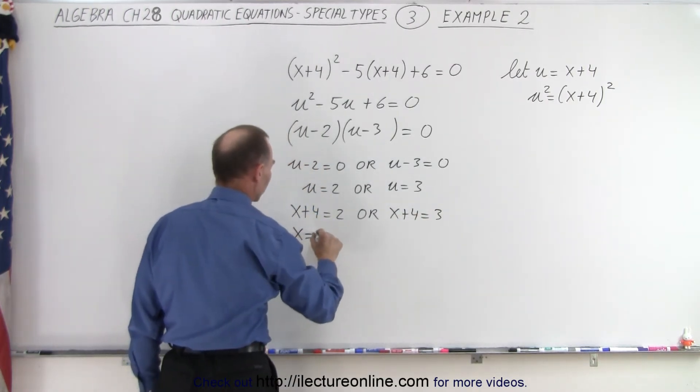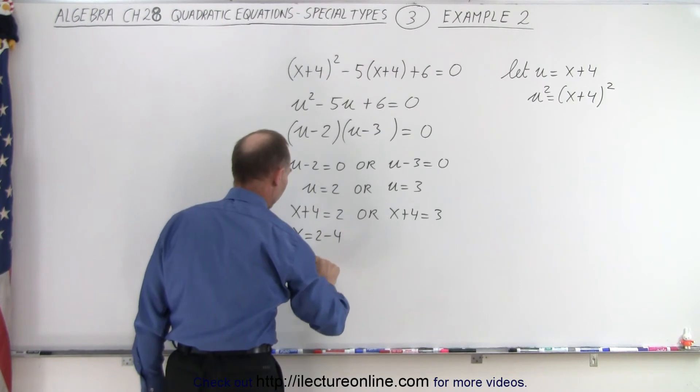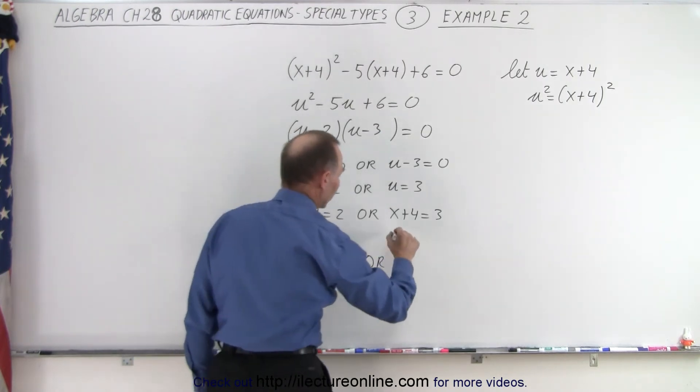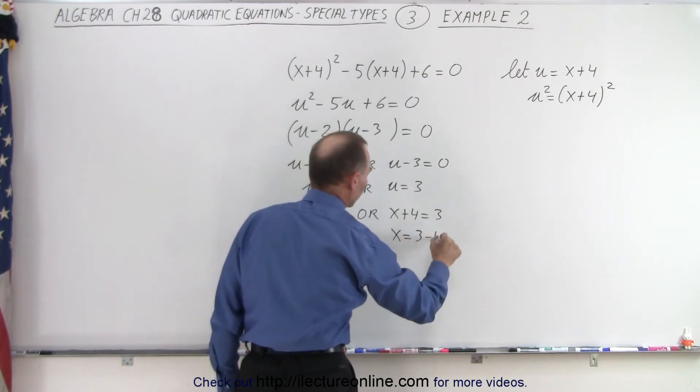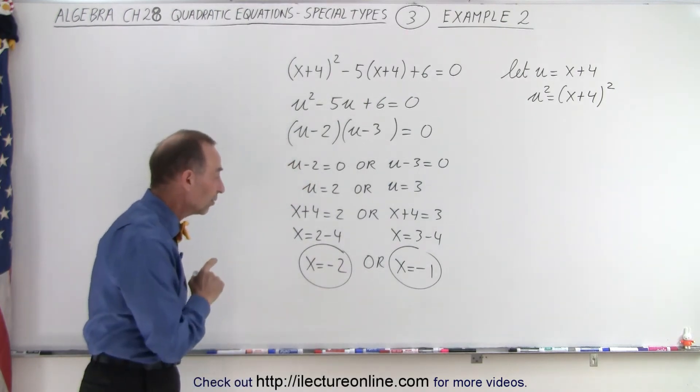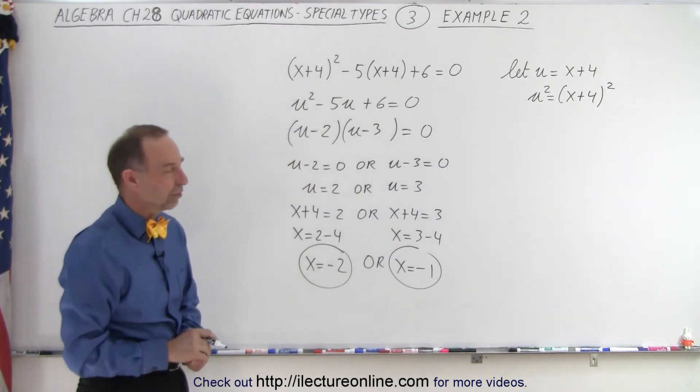In this case, we have x equals 2 minus 4 or x equals minus 2. Or in this case, we have x equals 3 minus 4 or x is equal to minus 1. So that's the real solution to the equation: x equals negative 1 or x equals negative 2.